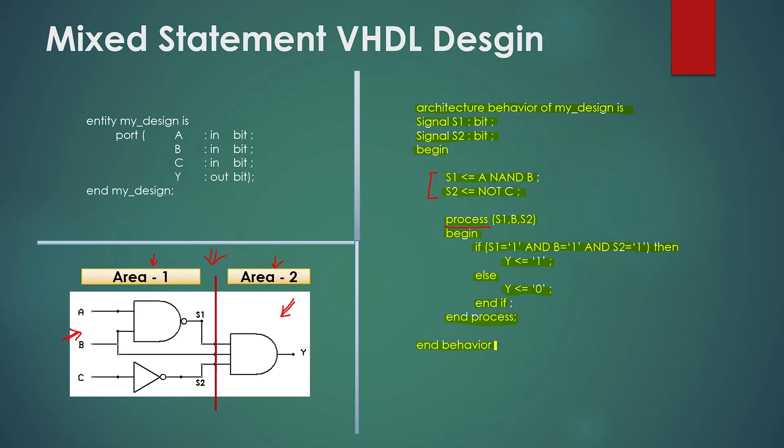Now can you tell me how many concurrent statements written in this architecture? Some of you might say there are two concurrent statements, but that is not true. Here we have three concurrent statements. Two you guessed right: signal S1 and signal S2 gets their function in concurrent execution. But remember the process statement as well.